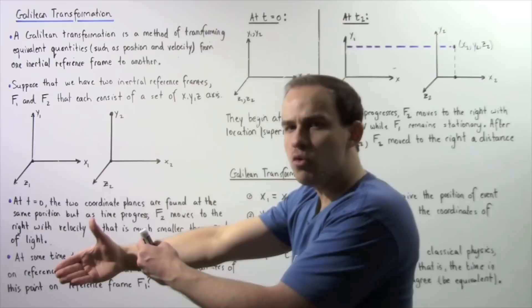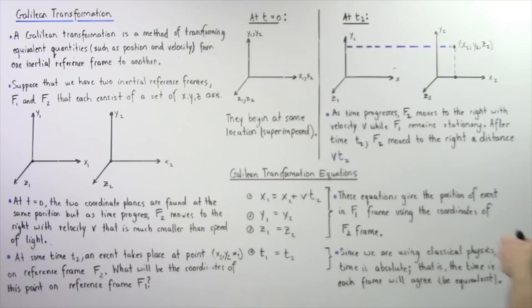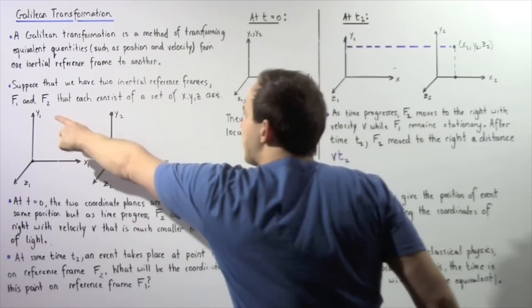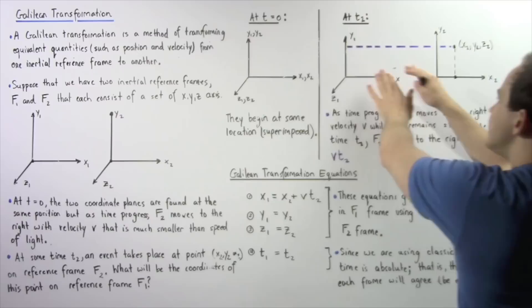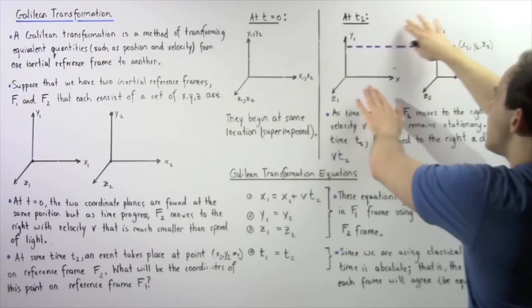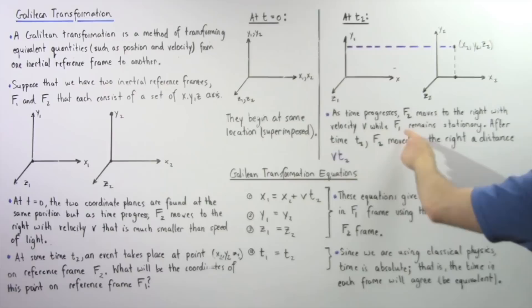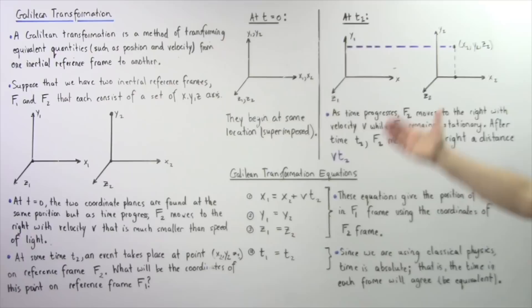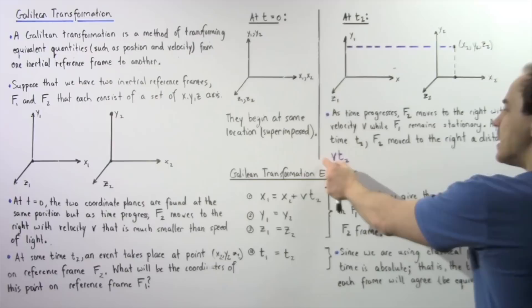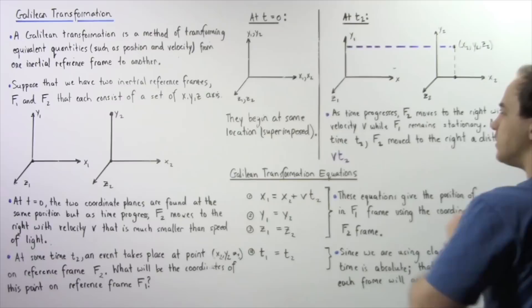At a time given by T2, the car has moved a certain distance to the right along the X axis with some velocity, so the second frame F2 has also moved to the right. Frame F2 moves to the right with velocity V while F1, the road, remains stationary. After time T2 has passed, F2 has moved a distance given by V multiplied by T2.